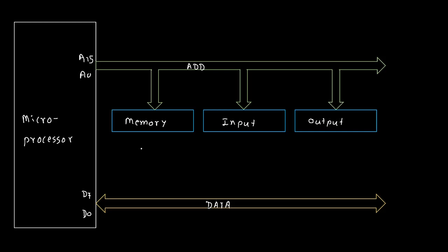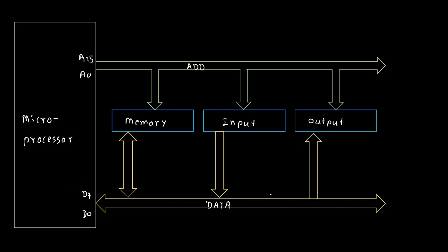From memory, data can be transferred into the microprocessor, and the microprocessor can also send data into memory — that's why the arrow is bidirectional, meaning data flow happens in both directions. For input devices, the microprocessor can only receive data, so that arrow is unidirectional pointing into the microprocessor. For output devices, the microprocessor sends data out, so that arrow is unidirectional pointing toward the output devices.